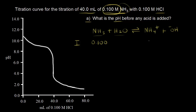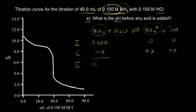We assume an initial concentration of zero for our products. Next, we think about the change — a certain concentration of ammonia is going to react, and we call that concentration X. Since NH3 turns into NH4+, whatever we lose for ammonia we gain for ammonium, so we write +X for ammonium and +X for hydroxide. At equilibrium: ammonia is 0.1 minus X, ammonium is X, and hydroxide is X.